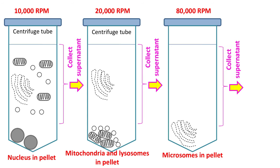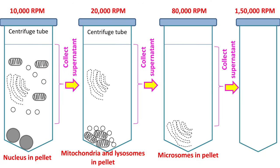Further centrifugation of supernatant at 1,50,000 rpm results in sedimentation of ribosomes in the pellet.